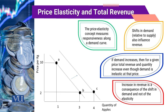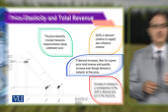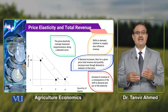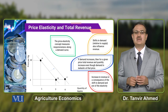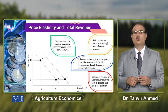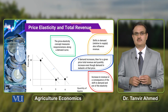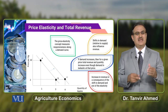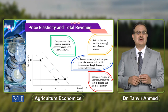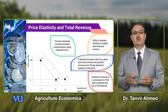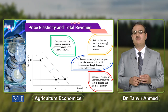Along one particular demand curve, there are two different points, A and B. We compute price elasticity between these two points to indicate what is the change in price elasticity or demand. Against these two points, we will report what is the total revenue of the firm.